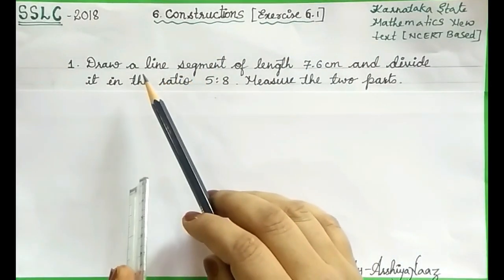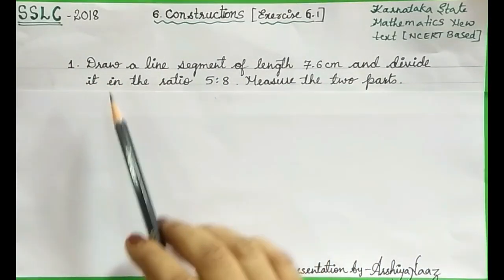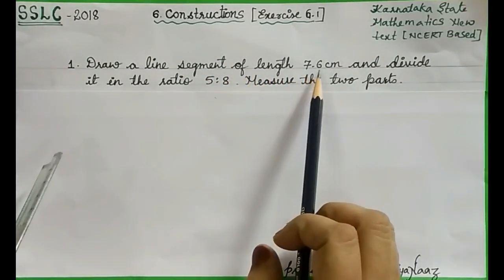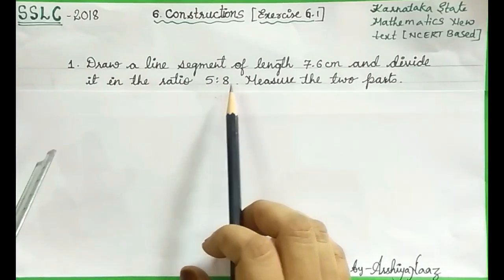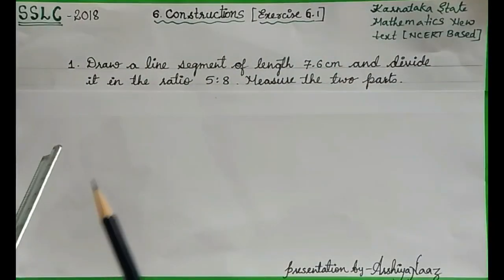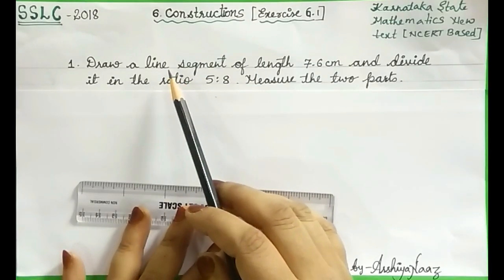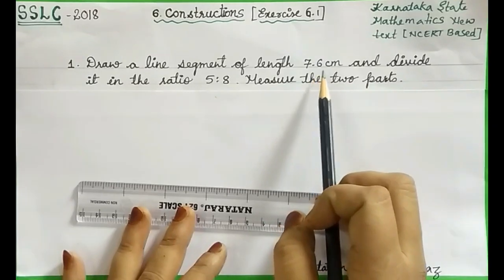The question is: draw a line segment of length 7.6 centimeter and divide it in the ratio 5 is to 8, measure the two parts. According to the question, let us draw a line segment of length 7.6 centimeter.